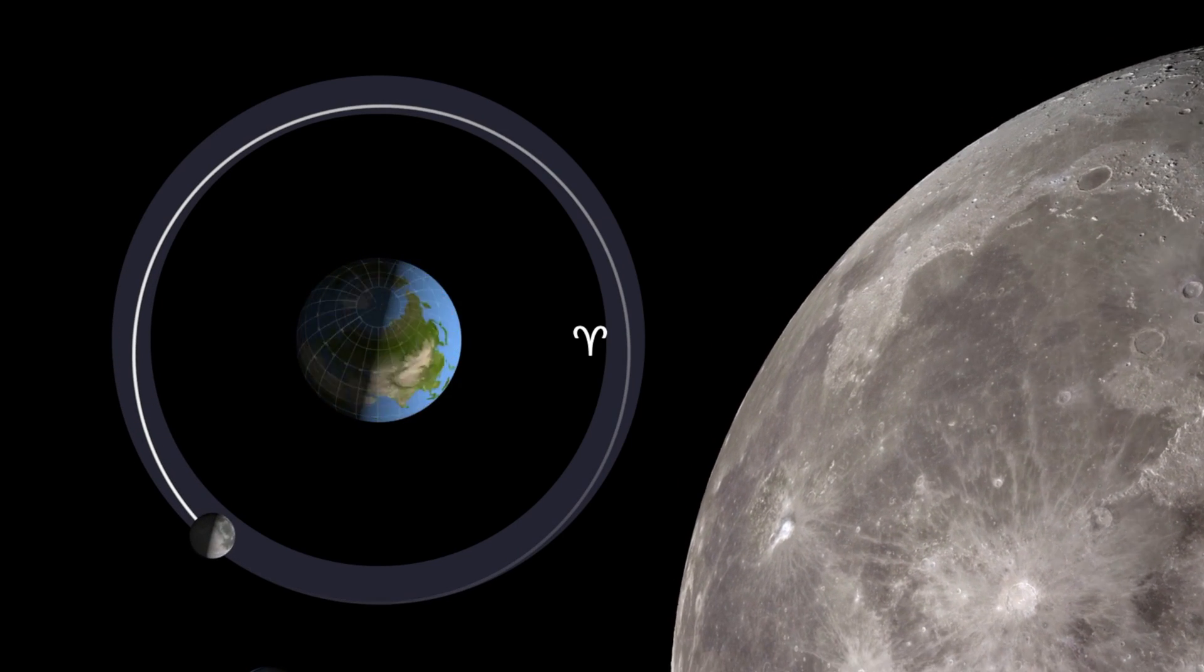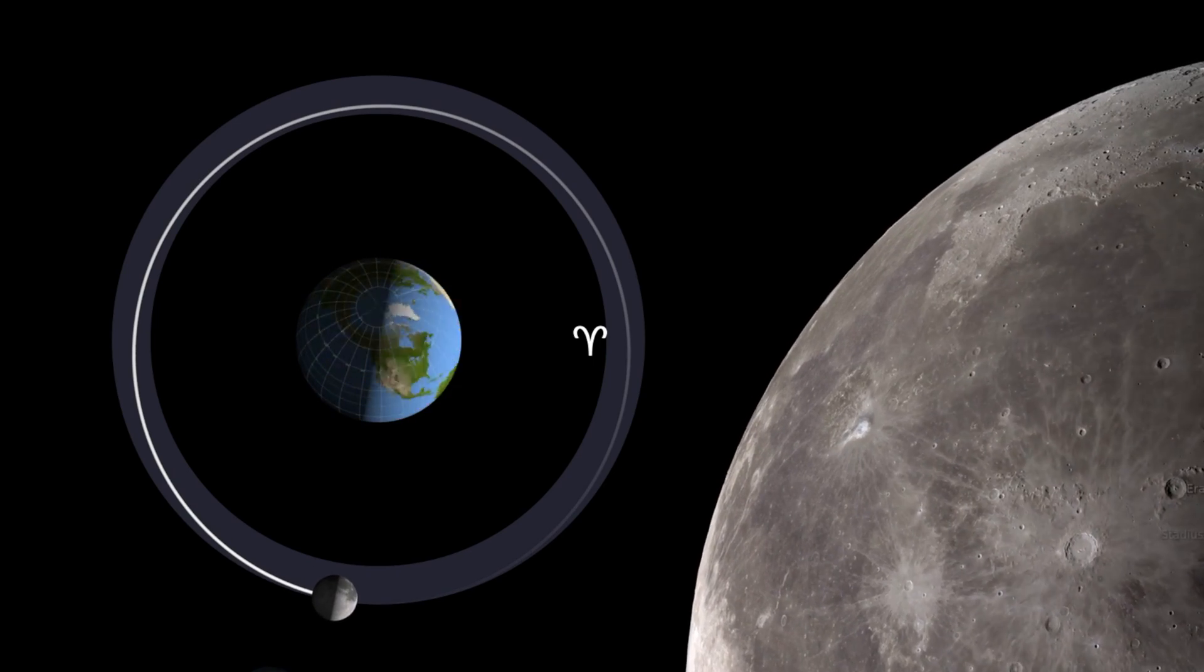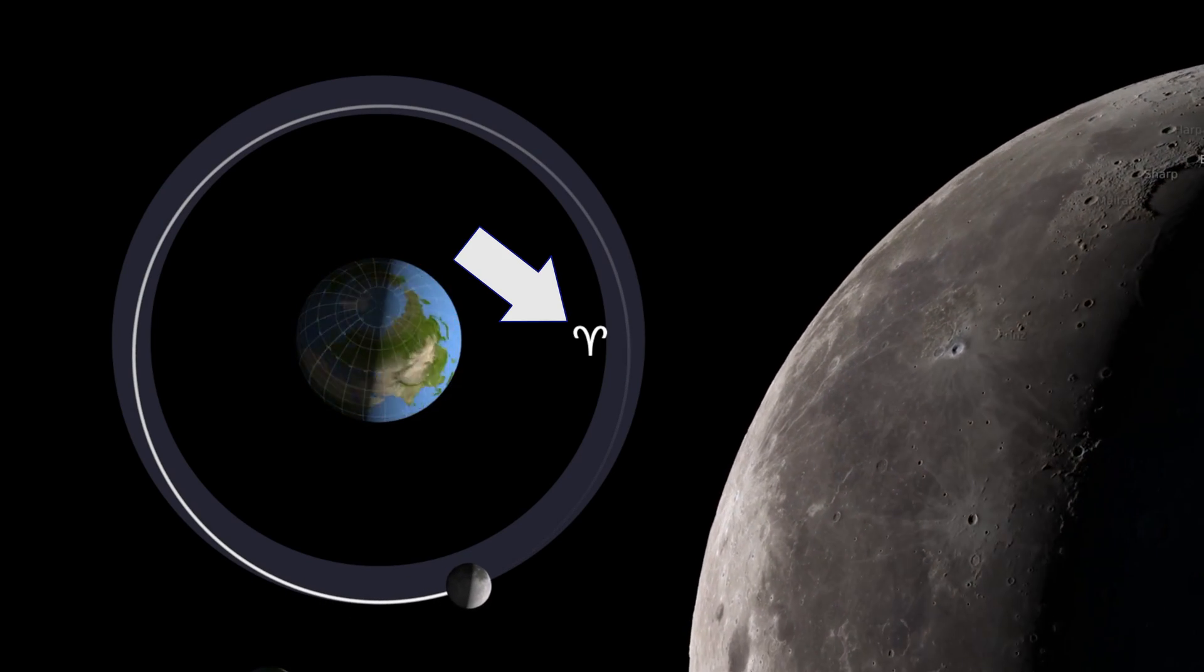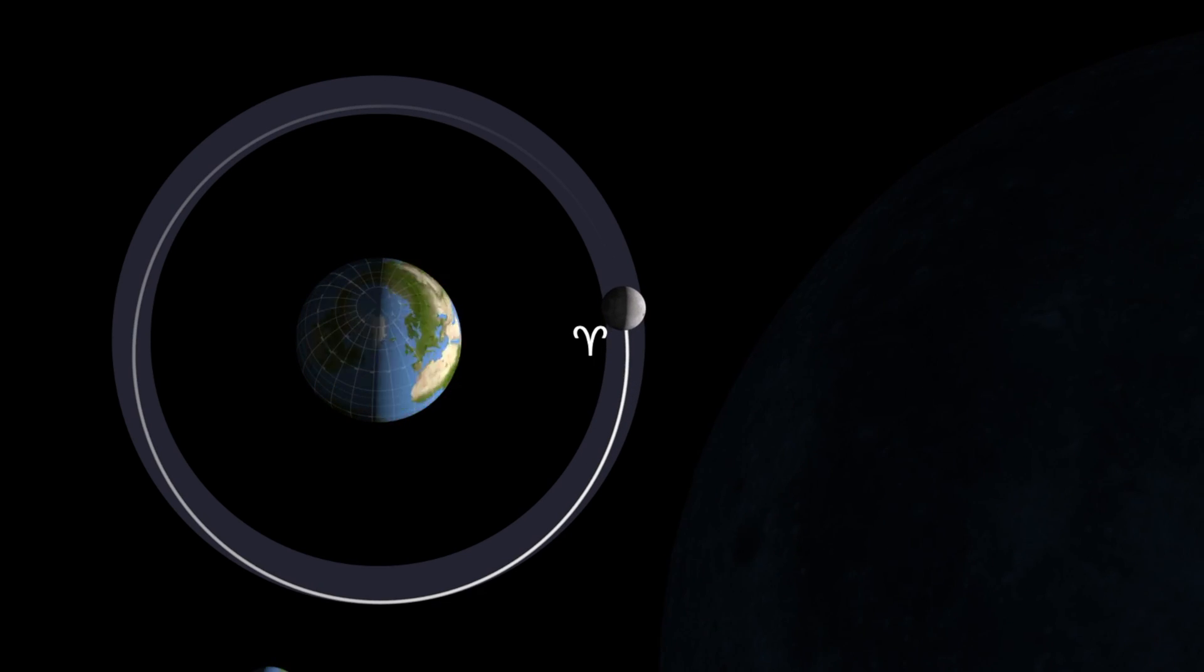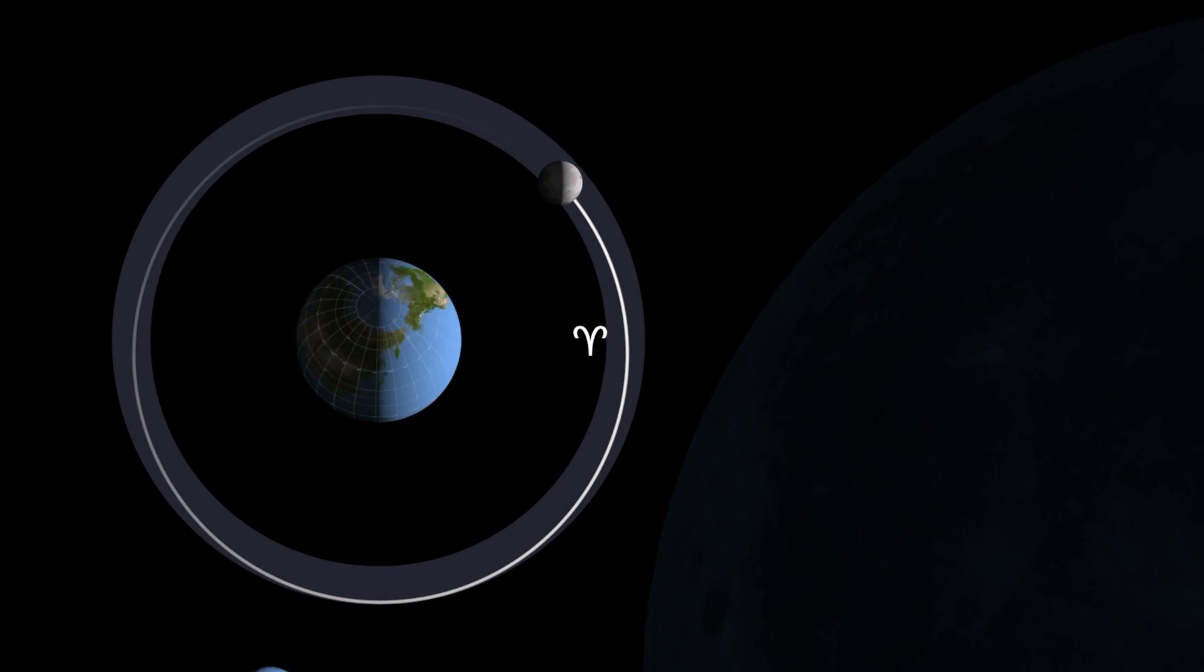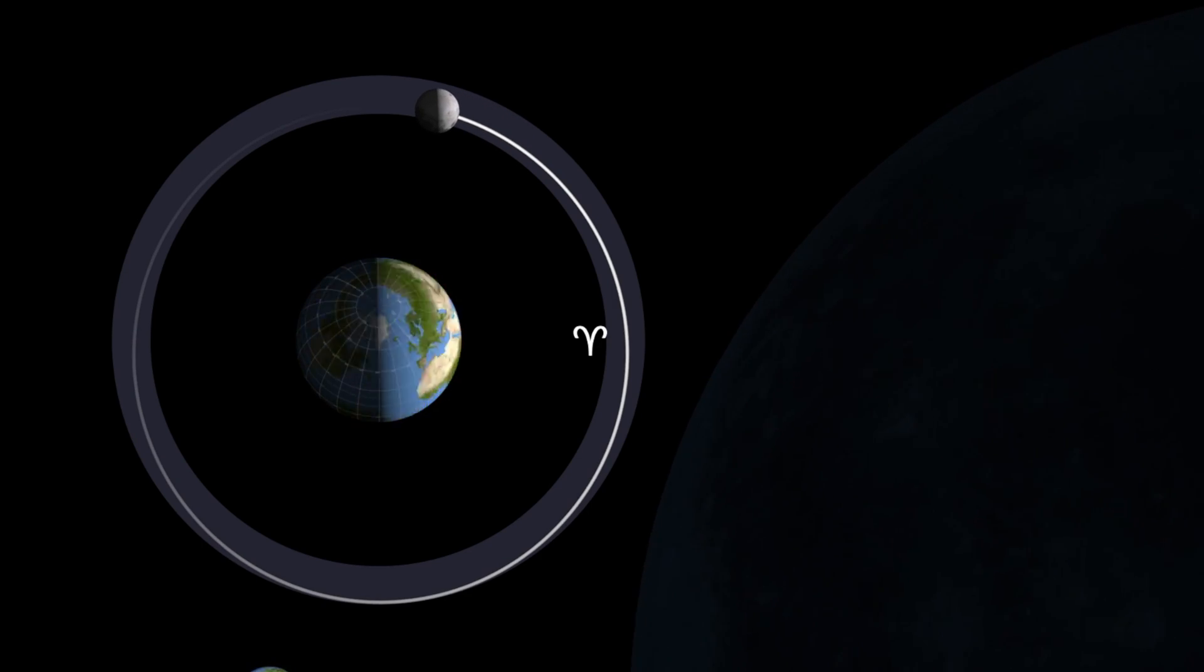It's useful information to have. That little ram symbol there, that's the symbol for the constellation Aries and note that Aries doesn't change position on the sky. So note that it just stays in the same point.